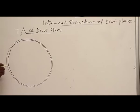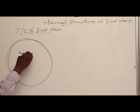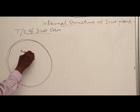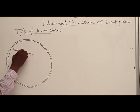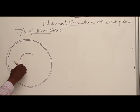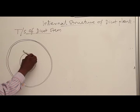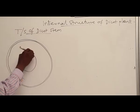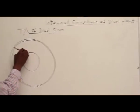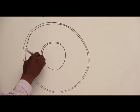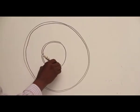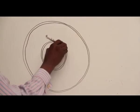Then we'll have the cortex, then separating the outer cylinder from the inner cylinder. There is this structure in dicot.